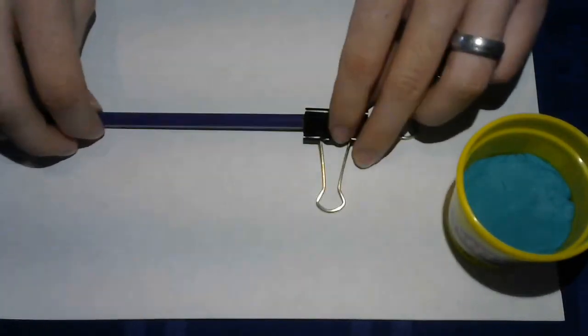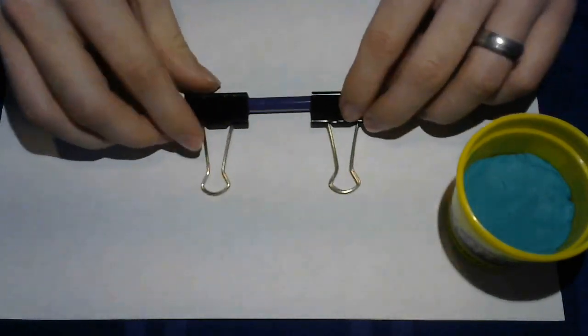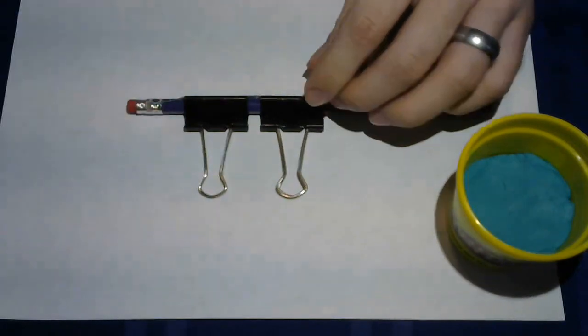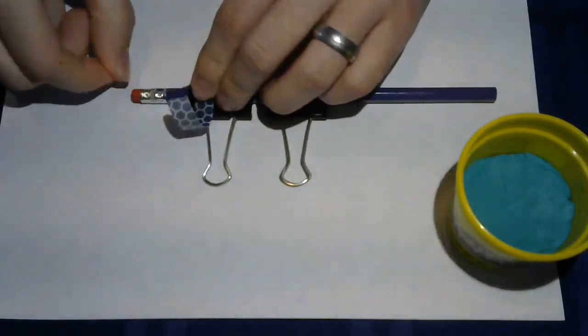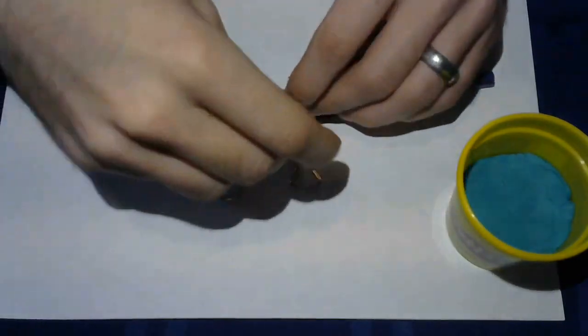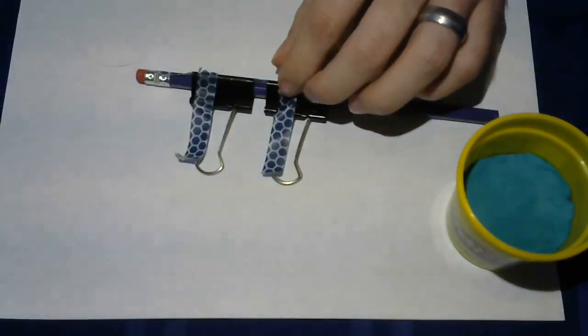First, slide the two binder clips onto the pencil and tape them into place. Now we're ready to place our fur sample into the holder. Tape each end of the fur to the two binder clips. You will want to gently pull the fur so it is straight as possible.